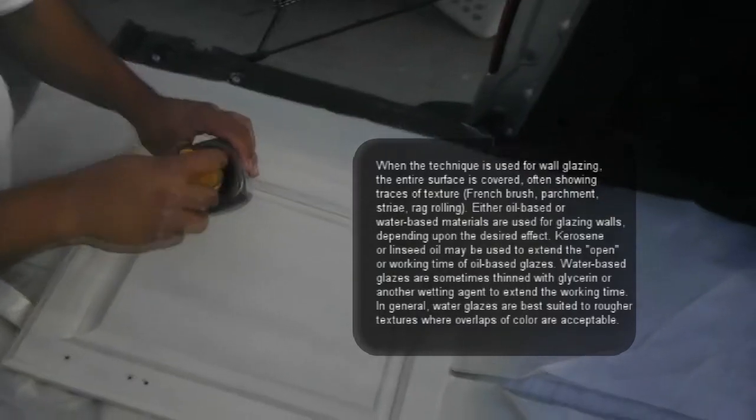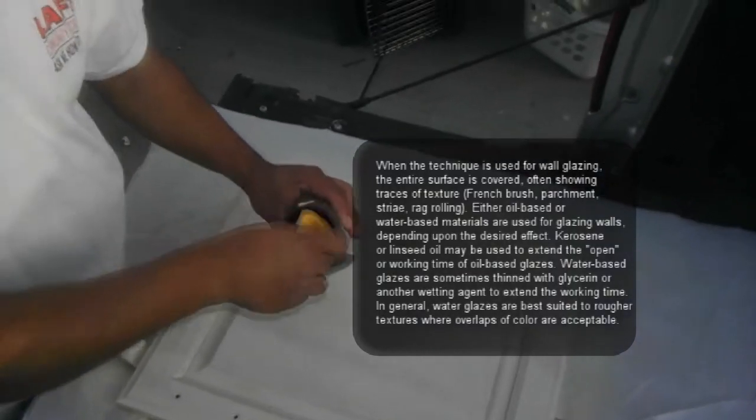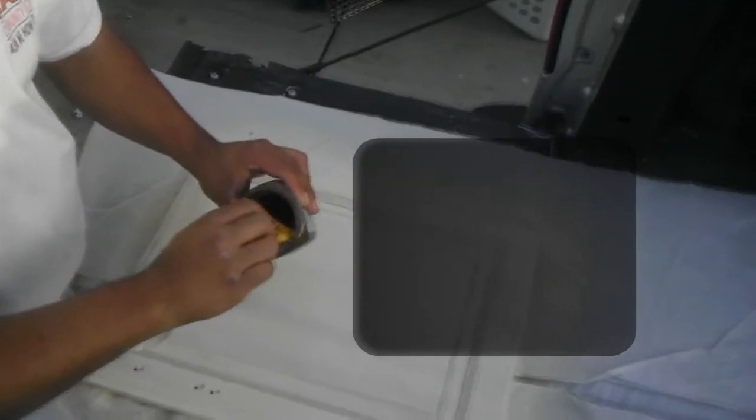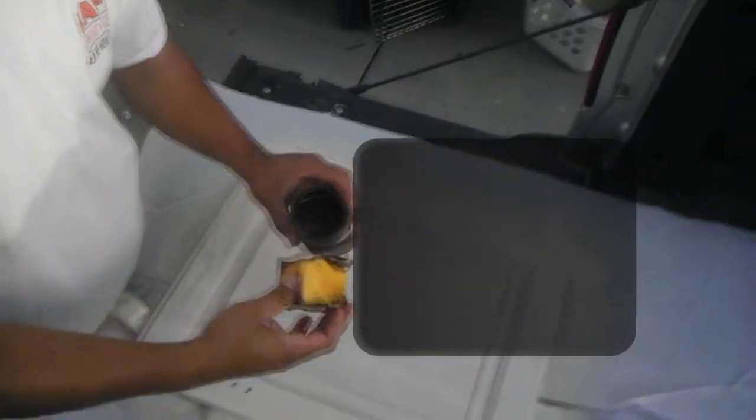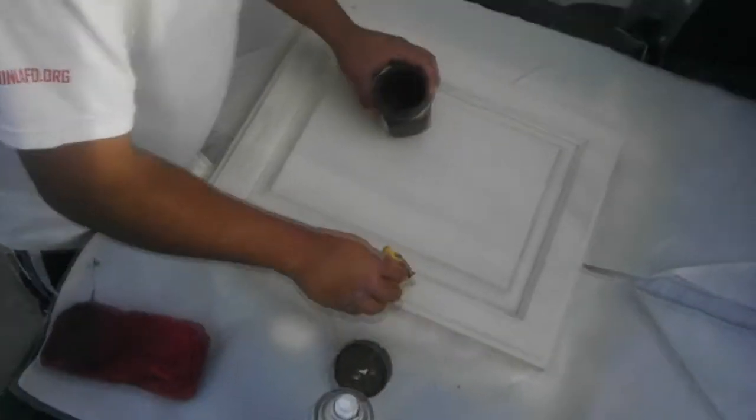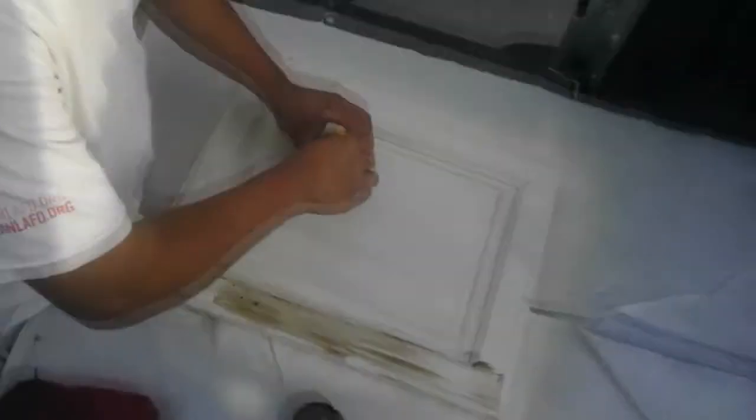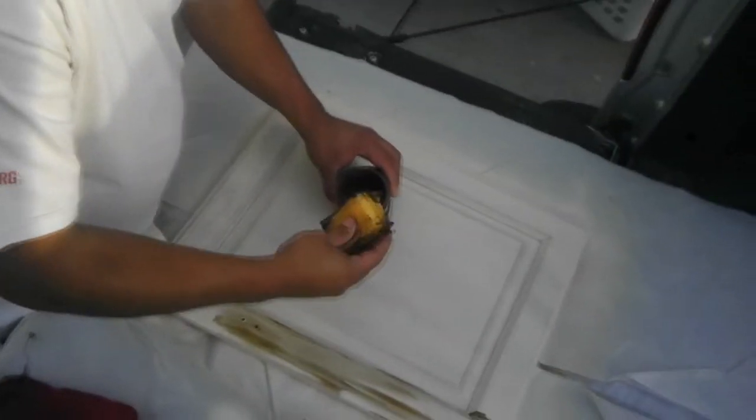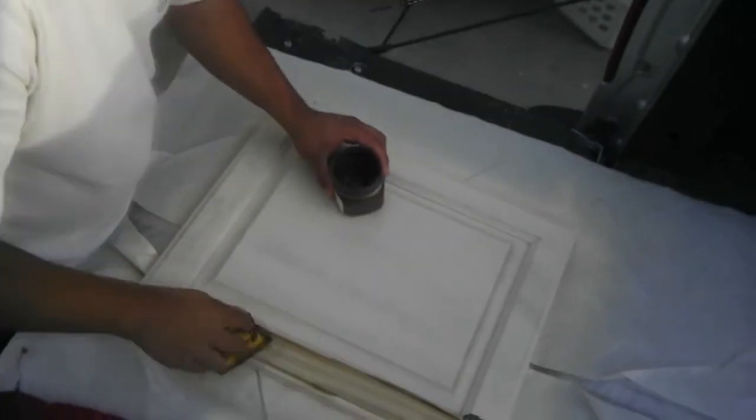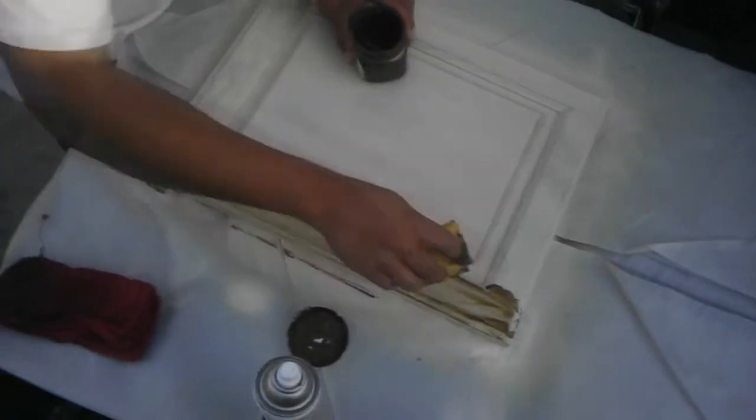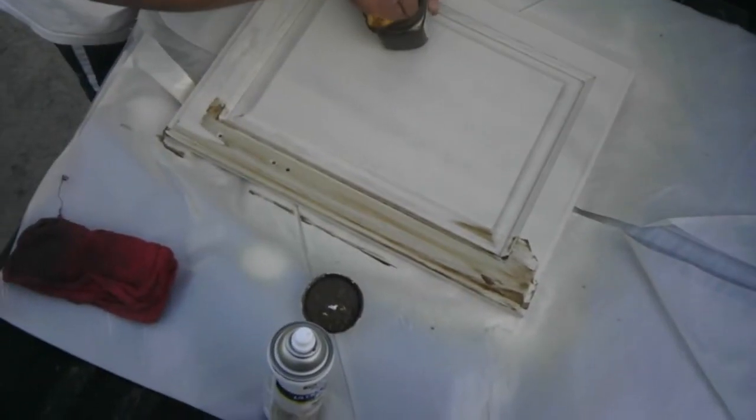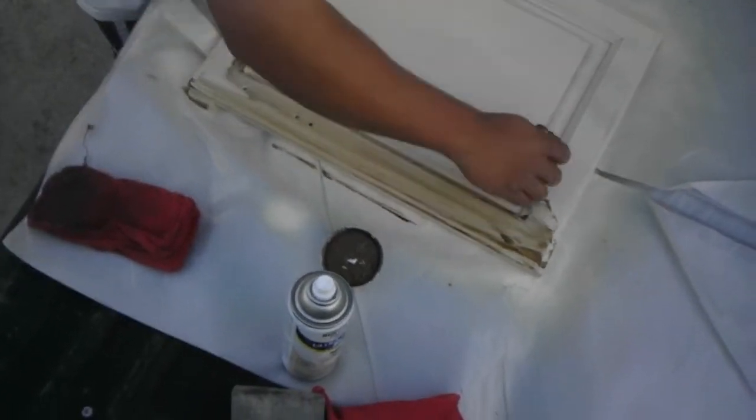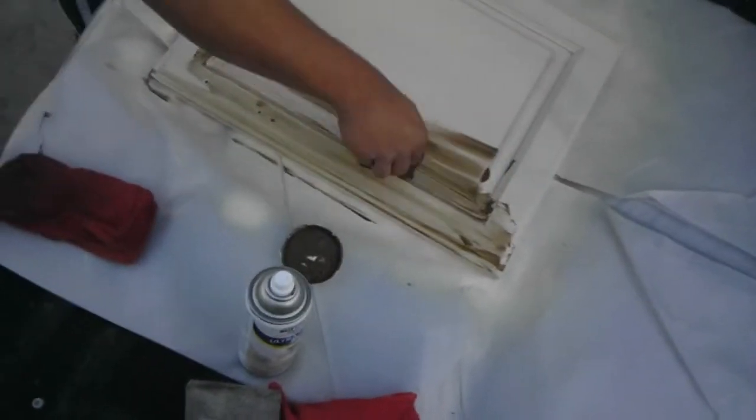Okay, so now we are going to start by using the glaze. You don't want to use a whole lot of glaze, you just want to use a little. Go around the area you want to be working on, and you want to keep it in one direction. It all depends on the style that you want.